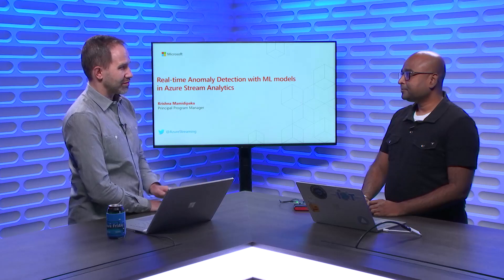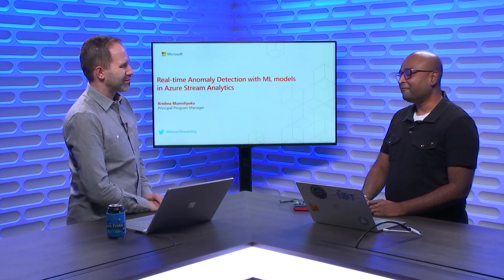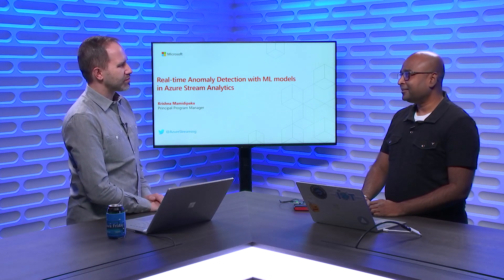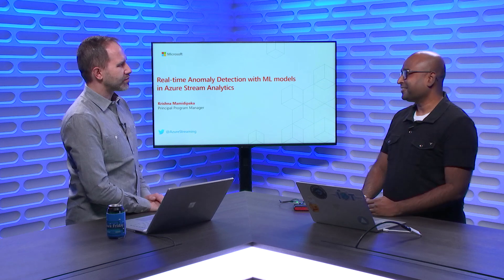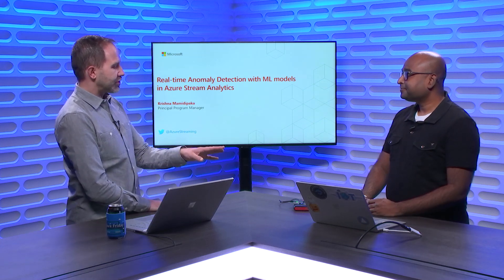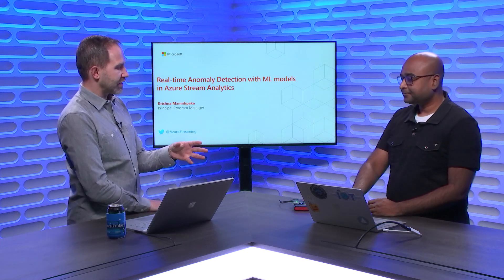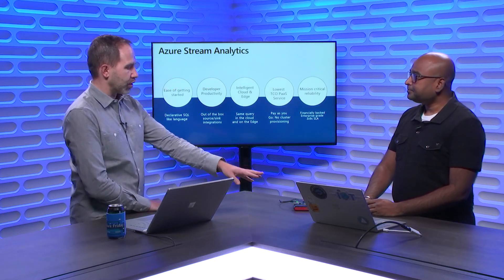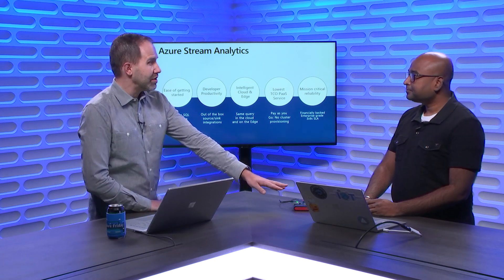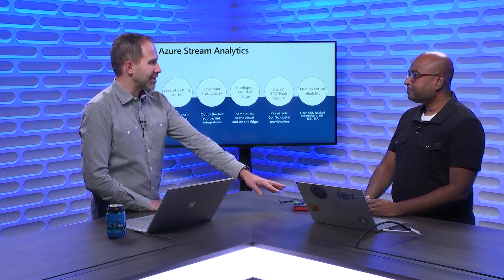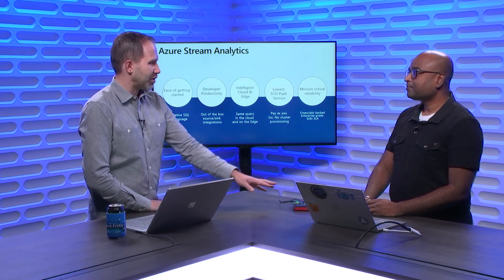So this is a piece of hardware and you're going to show me how I can detect an anomaly with this, and it's going to be very simple and very interesting. This data is being pushed into Azure Stream Analytics. I'm assuming that there's a world where I have millions of these — like a fleet of these, right?